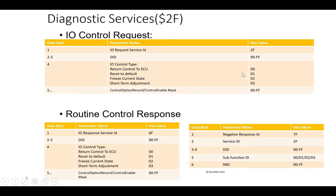Sub-function 0x00 is Return Control to ECU, which indicates to the ECU that the client no longer has access and the mentioned signal's control is returned to the ECU — meaning the actual value being updated in the ECU will be used.